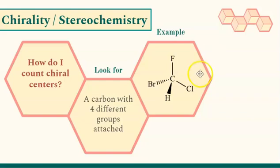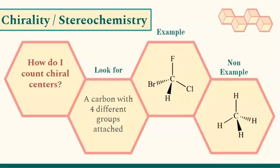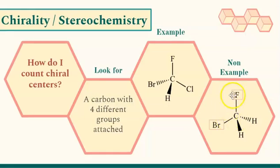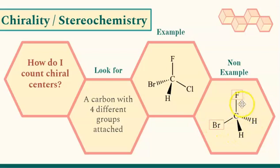An example is a carbon in the middle with four different other atoms attached to it. A non-example would be a carbon with four of the same atoms — so a carbon with four hydrogens would not be a chiral center. Even if I put in a fluorine and a bromine, that still wouldn't count because there are still two hydrogens. We need four different groups or atoms attached to the carbon.